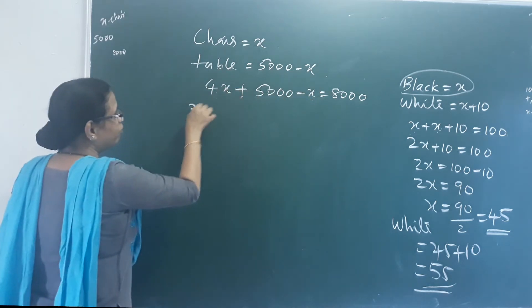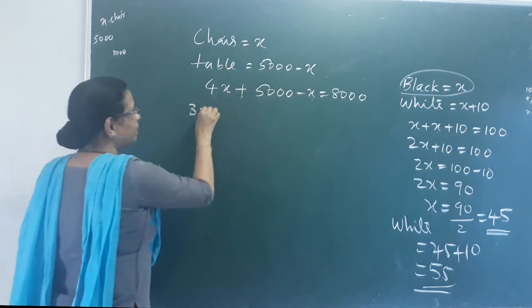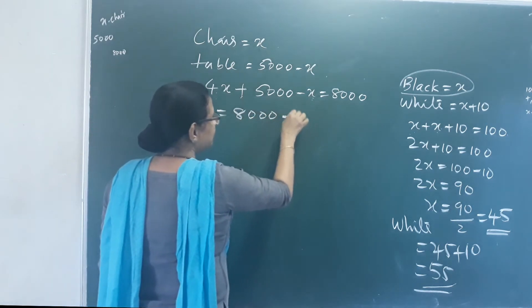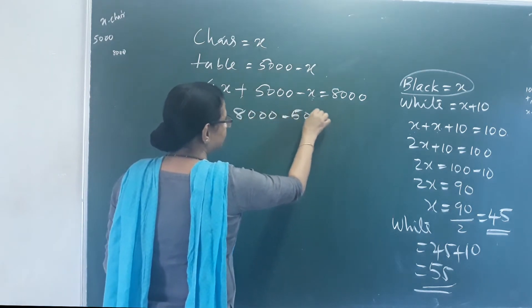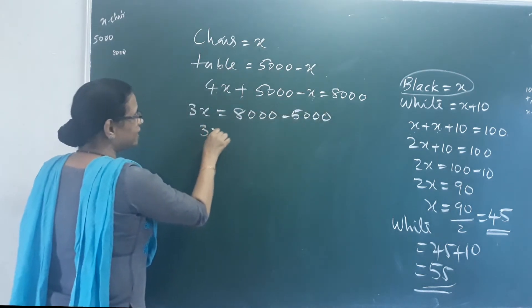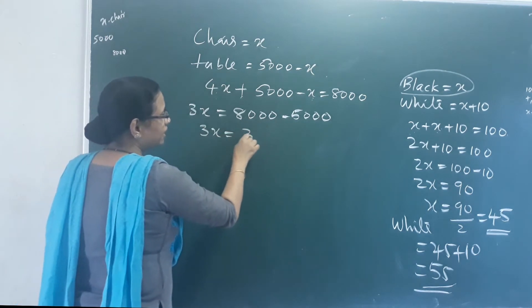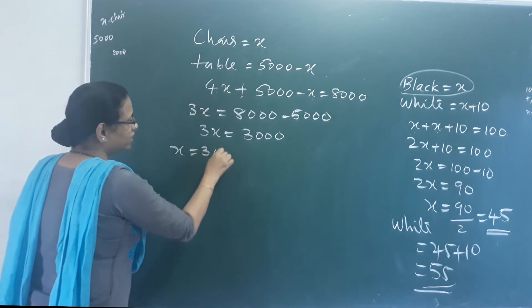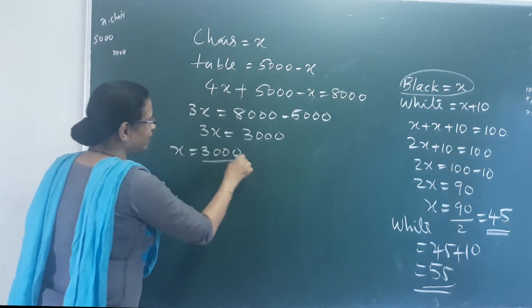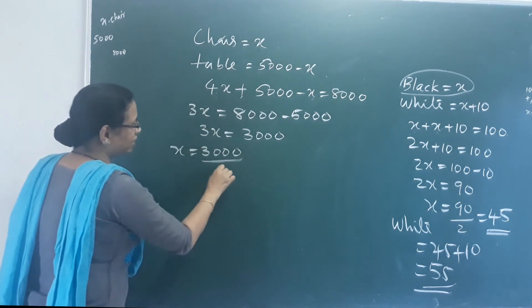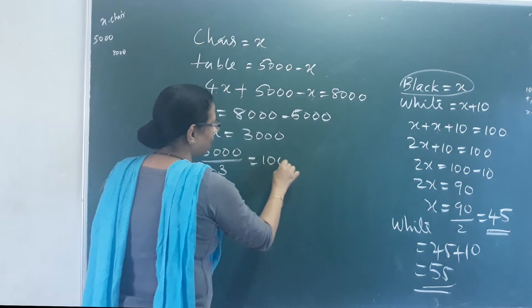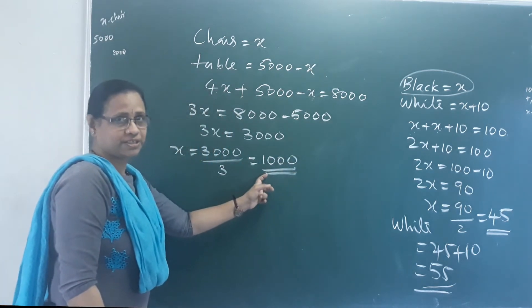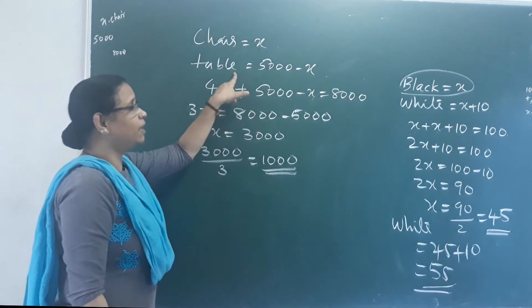So 4X plus (5,000 minus X) gives 3X. Then 8,000 minus 5,000: 3X is equal to 3,000. X is equal to 3,000 divided by 3, that is equal to 1,000 rupees. So one chair's value is 1,000 rupees. The table's price is 5,000 minus 1,000, which is 4,000.